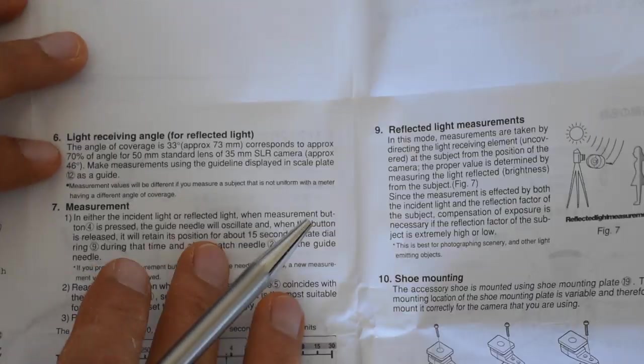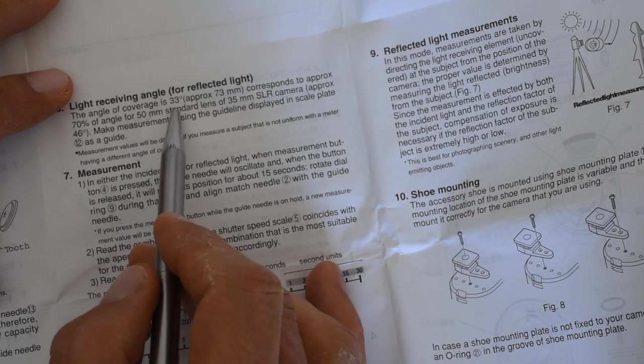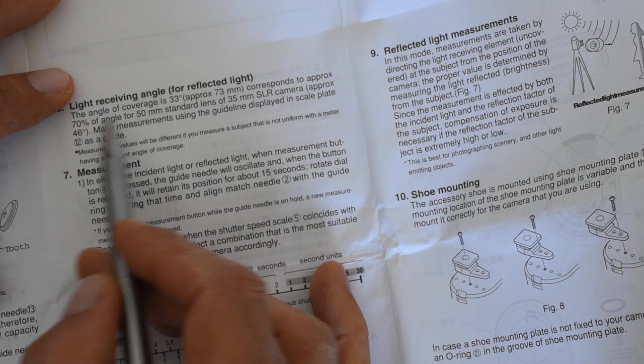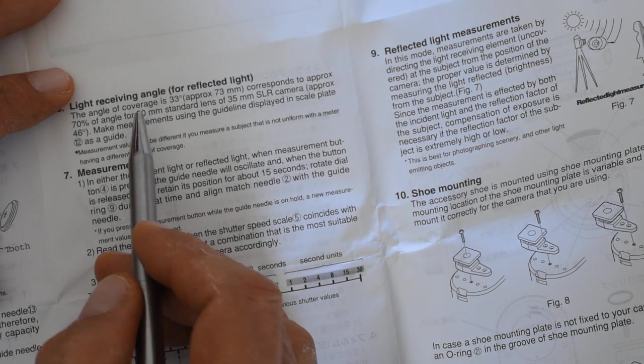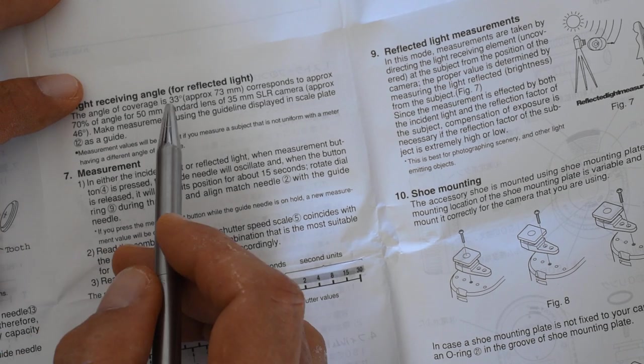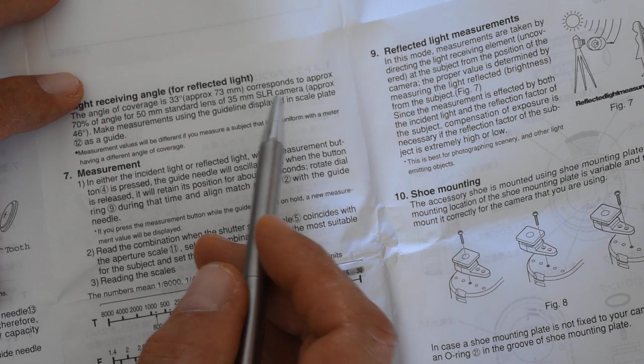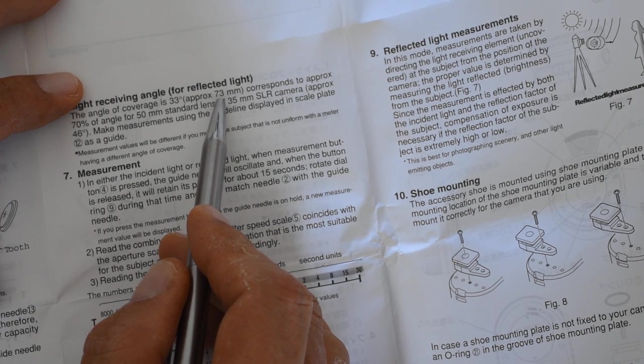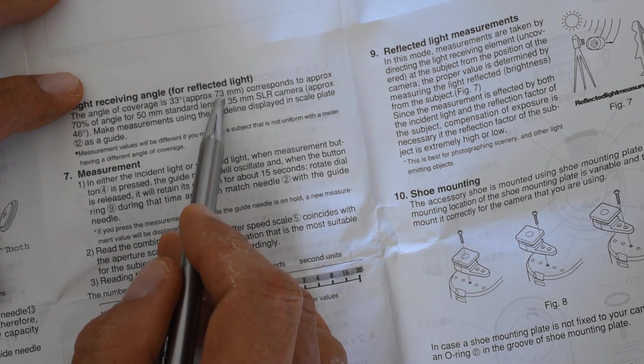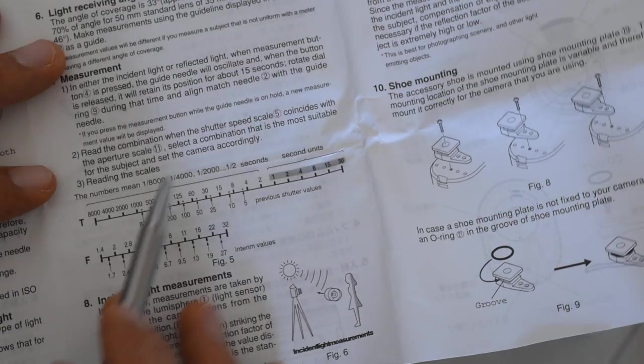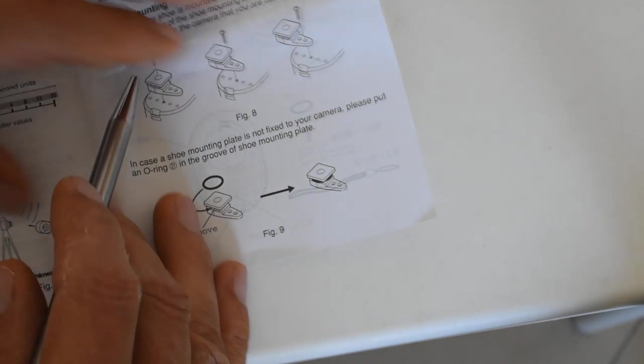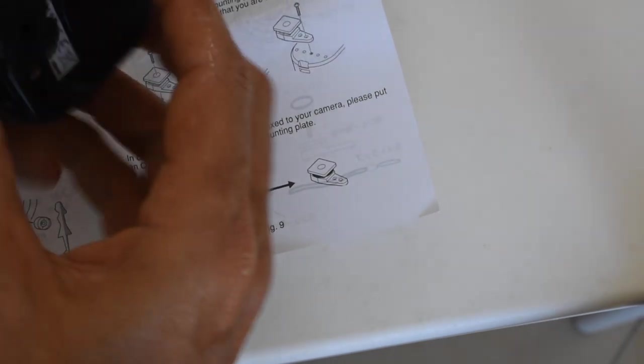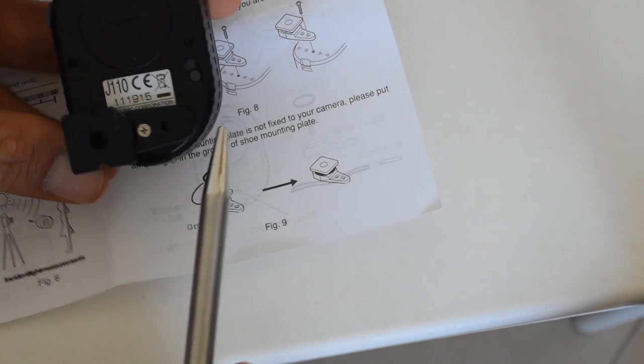Set the ISO, switching to incident and reflective. We talked about that. According to the instructions, the angle of coverage is 33 degrees, or approximately 73 millimeters, which corresponds to approximately 70% of the angle for a 50 millimeter standard lens on a 35 millimeter SLR camera, which is approximately 46 degrees. So a 50 millimeter lens has a coverage of 46 degrees. The angle of coverage is 33. It's kind of too much information. Basically, it's roughly equivalent to a 73 millimeter lens. You're basically getting full field averaging coverage as if you had a 73 millimeter lens on your camera.